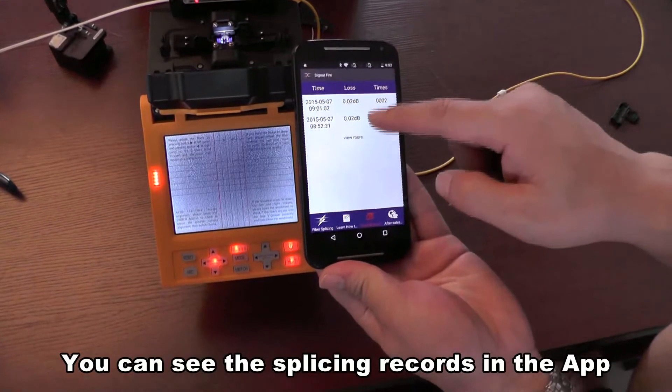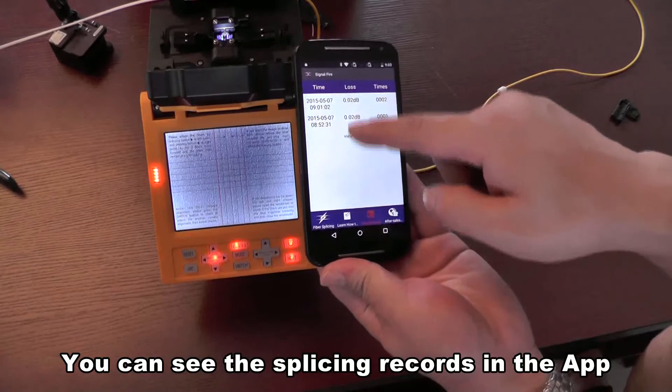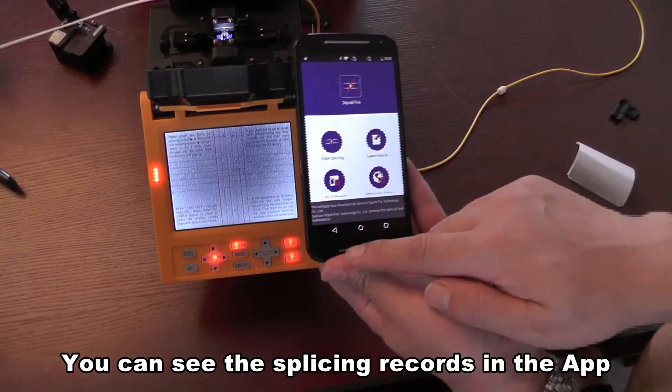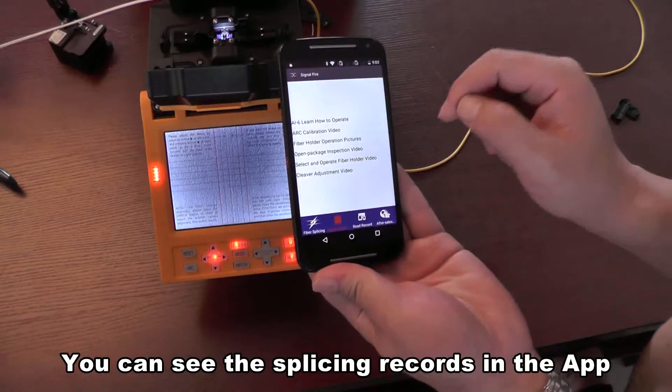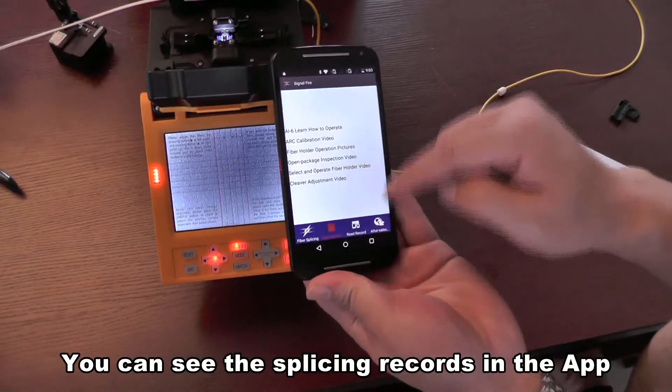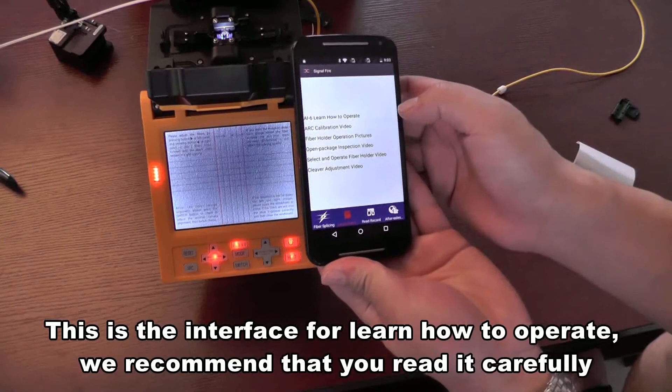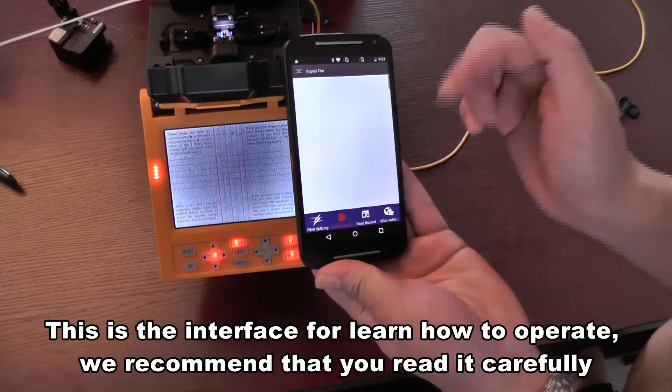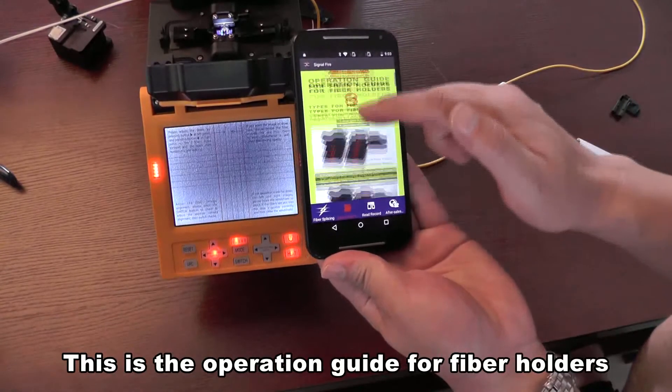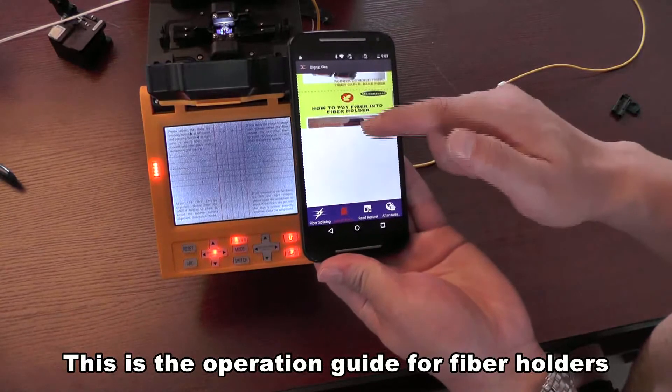You can see the splicing records in the app. This is the interface to learn how to operate. We recommend that you read it carefully. This is the operation guide for fiber holders.